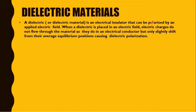A dielectric material can be polarized by an applied electric field. When a dielectric is placed in an electric field, electric charges do not flow through the material — as an insulator opposes the flow of current, it will not flow through as it does in an electrical conductor. Instead, charges shift slightly from their average equilibrium position, causing dielectric polarization.